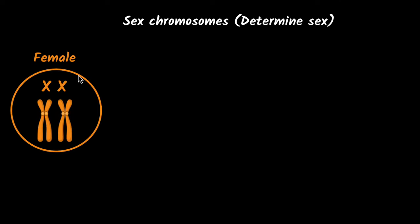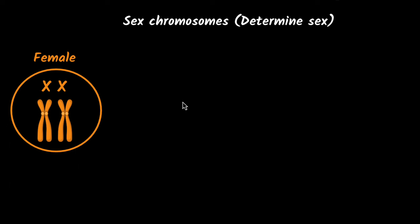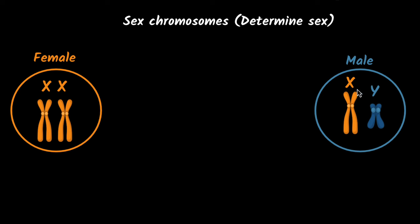How? Well, it turns out that if you look at females, both the sex chromosomes are identical. We call them X, and therefore we say females have XX sex chromosomes. Versus when it comes to males, they have one X chromosome, but the second chromosome is slightly shorter. We call this the Y chromosome, and therefore we say males have XY sex chromosomes.